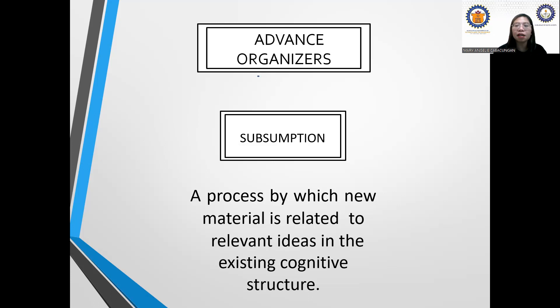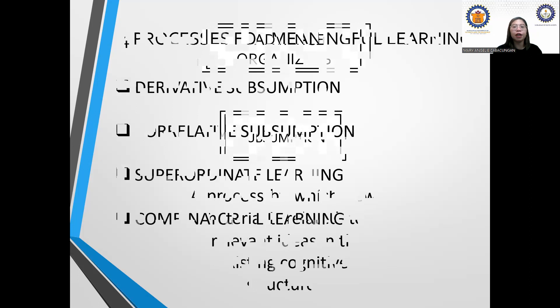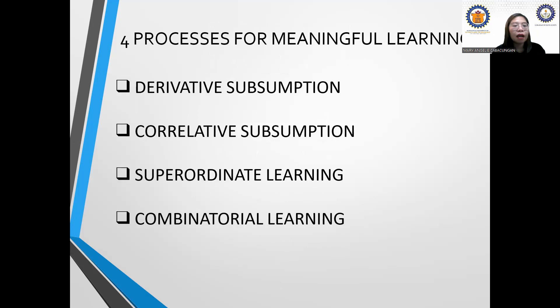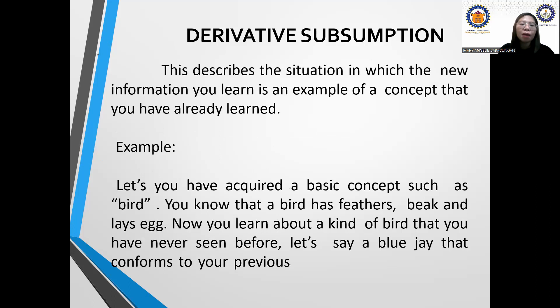There are four processes for meaningful learning: derivative subsumption, correlative subsumption, superordinate learning, and combinatorial learning. Derivative subsumption describes the situation in which the new information you learn is an example of a concept you have already learned.